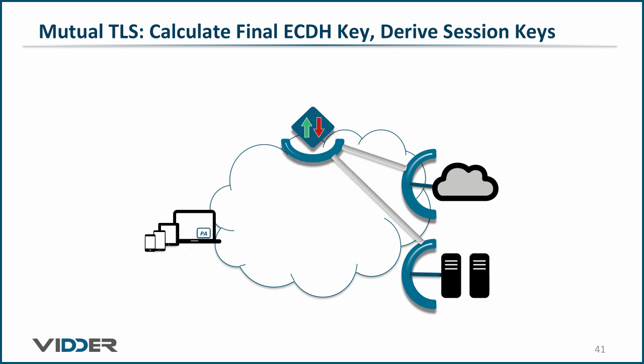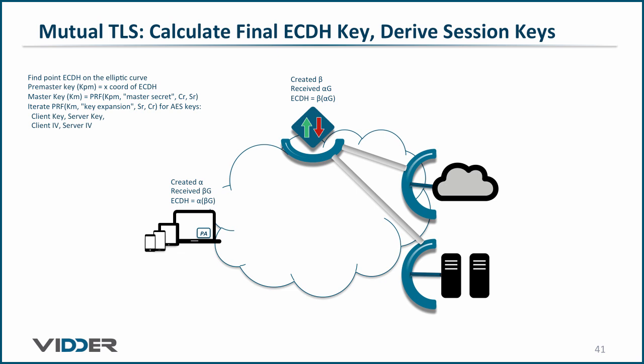We are done with a good bit of stuff on this slide, so we can simplify things a little. Recall that the client randomly generated the value alpha and received beta applied to the generator from the controller. With that, the client applies alpha to that value to determine the elliptic curve Diffie-Hellman shared key. And the controller randomly generated the value beta and received alpha applied to the generator from the client. With that, the controller applies beta to that value to determine the elliptic curve Diffie-Hellman shared key. An elliptic curve exists in two-dimensional space, and the ECDH shared key has both an X and a Y value. The pre-master key is the X value. The master key KM is created from a pseudo-random function applied to the pre-master key, concatenated with the text MASTERSECRET and the client's random number and the controller's random number. Note that the pseudo-random function is defined by the TLS suite, and for the software-defined perimeter, it is SHA-384.